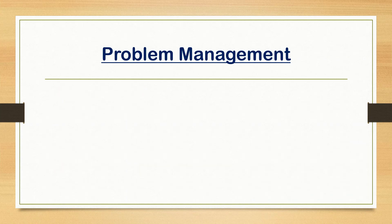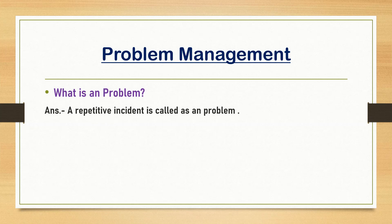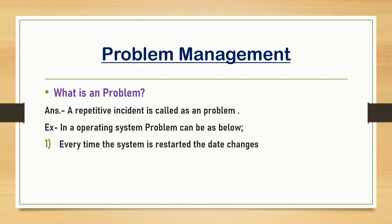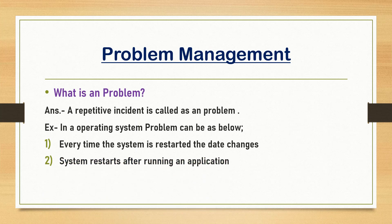Next is problem management. What exactly is a problem? A repetitive incident is called a problem — whenever an incident is continuously repeating, it can be called a problem. For example, every time the system is restarted, the date of that system changes. Another example: a system restarts whenever an application is run, and this happens continuously. That is a problem.